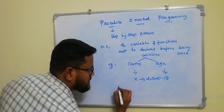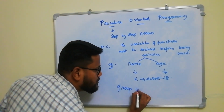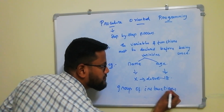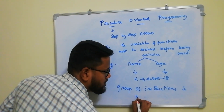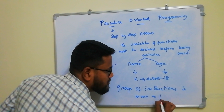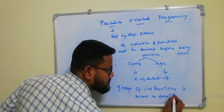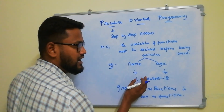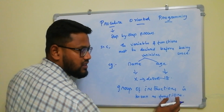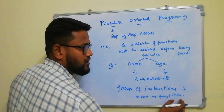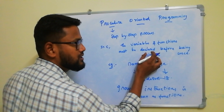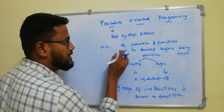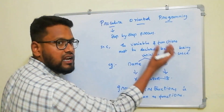A function is nothing but a group of instructions. A group of instructions is known as a function. If we use a function, we can use this data. This function must be declared before being used. We can declare what variable is used for and what function is used for.